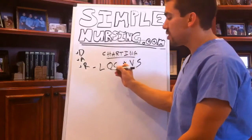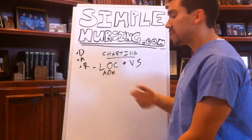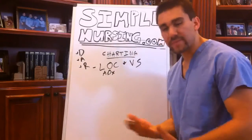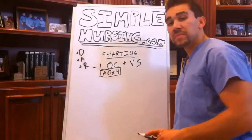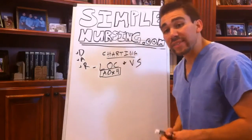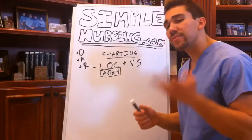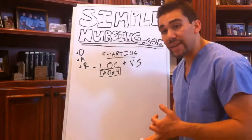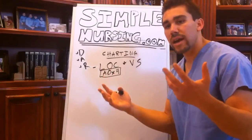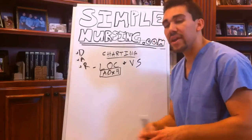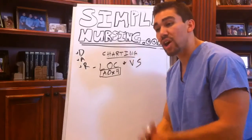We usually chart LOC by saying alert and orientated times three or times four. Albertine, your patient is complaining of chest pain — that's good, he's talking. You can ask him four questions: his name, his birthday, today's date or something relevant like today's president or month, and also location — where is he at? Just to make sure the patient is all with it.